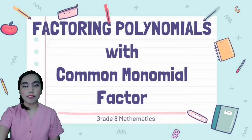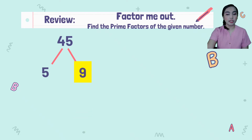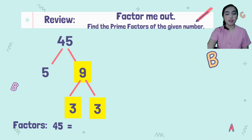Okay, so let's have this review — Factor me out. Find the prime factors of the given number. So we have 45. The factors are 5 and 9. But 9 is not yet our prime factor, so we get the prime factor of 9, which is 3 and 3. So therefore, the factors of 45 are 3 times 3 times 5.